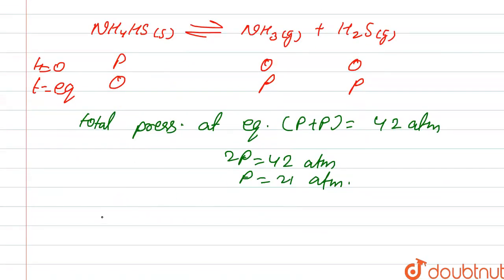Kp. Value of Kp. So from here, for this equation, Kp is equal to P of NH3 into P of partial pressure of H2S, right? So the value of pressure at equilibrium is P, so it is P square. And